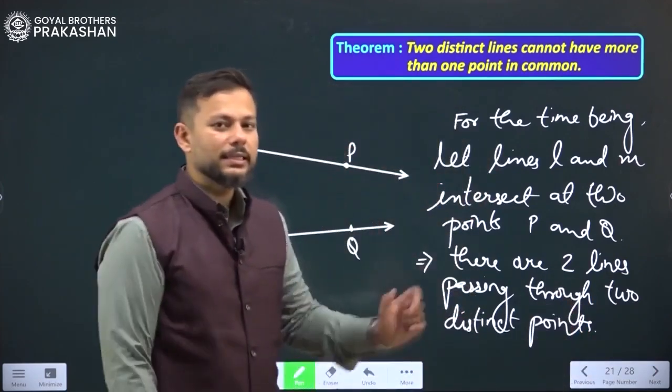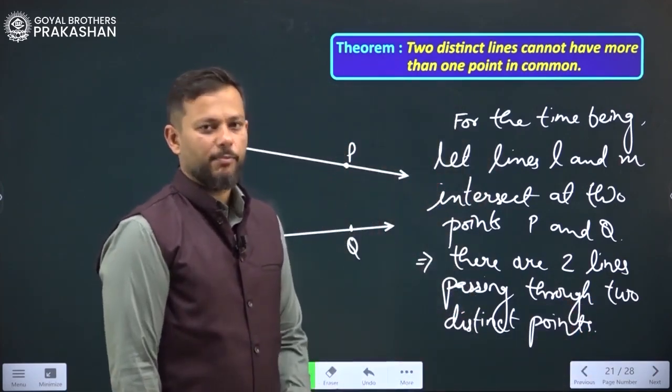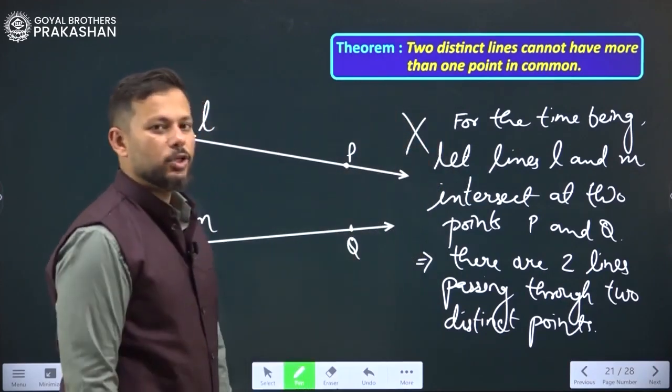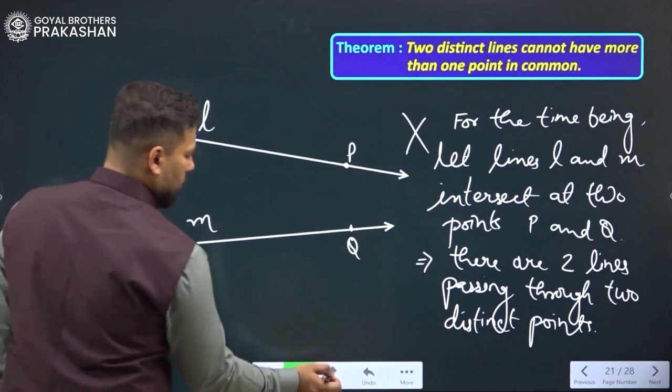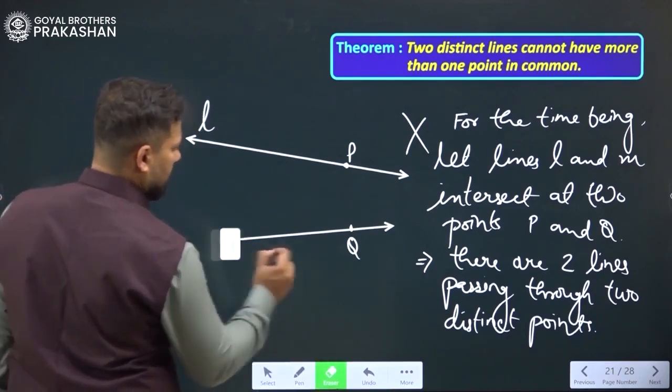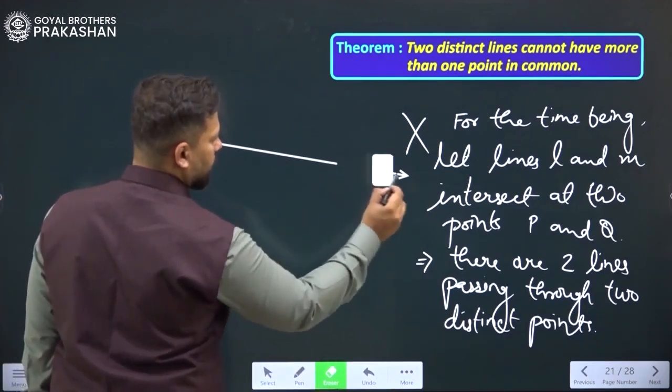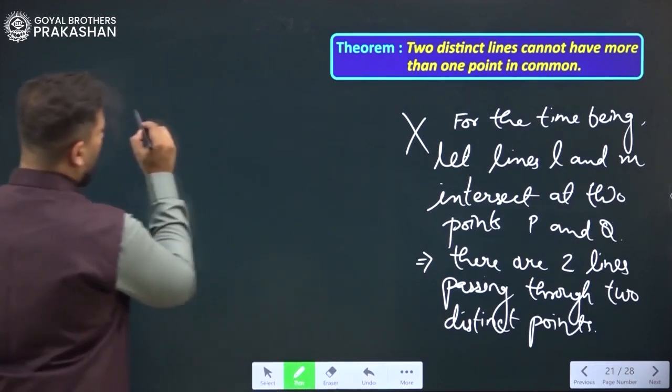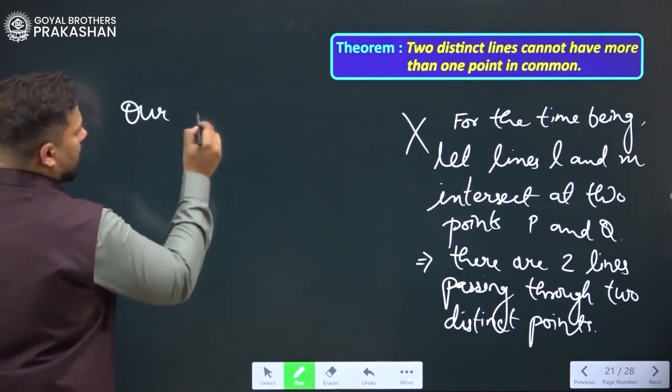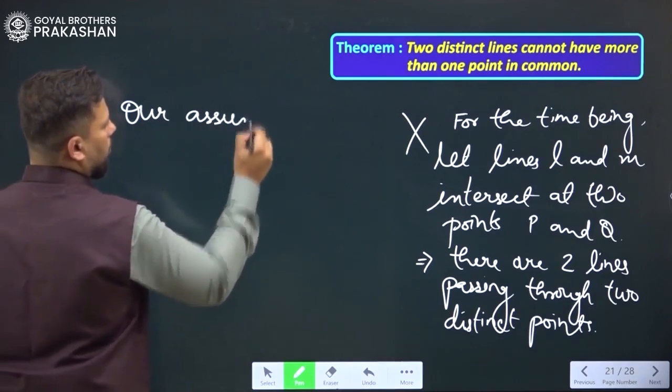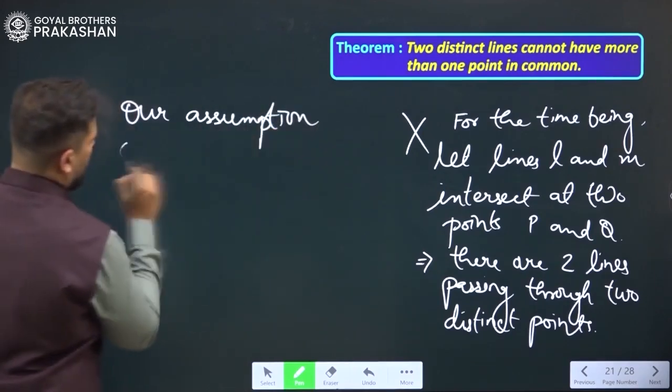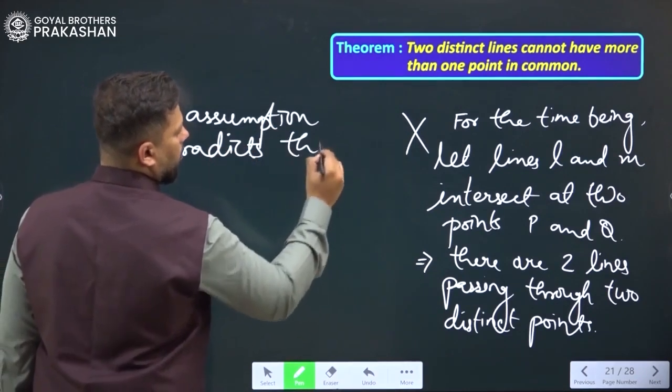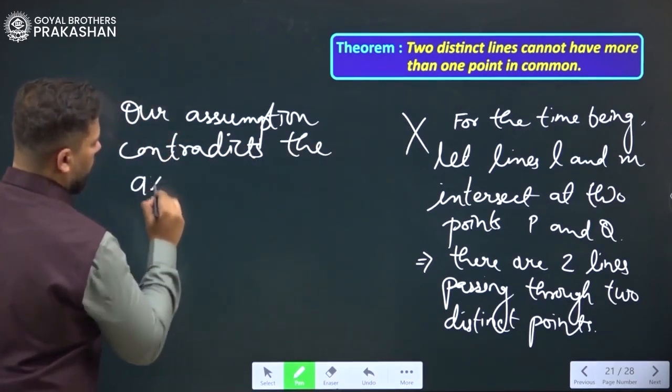But doesn't this contradict axiom 5.1? Yes, it is contradicting the axiom 5.1. Let me just write it for you. Let us just remove these lines. Let us say that our assumption contradicts the axiom.